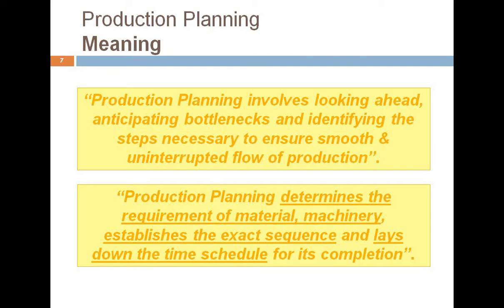Production planning involves determining the requirement of various inputs — estimating the requirements of material, manpower, machinery, and money — and it establishes the exact sequence and lays down the time schedule for completion. So there are three key things: first, estimation of various resources such as raw material, machinery, and manpower; second, developing a sequence among them; and third, time scheduling — determining when we are going to complete the production.